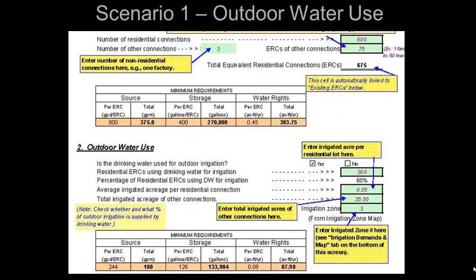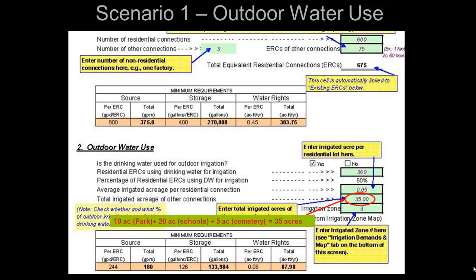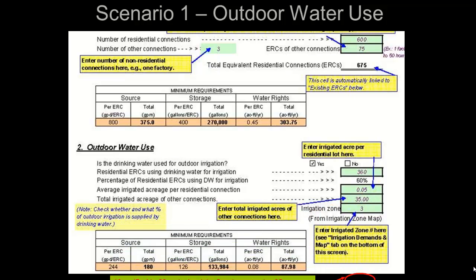Next, we'll perform the calculations for outdoor water use. This community is in Zone 3, so we enter 3 in this field. 360 of the 600 residential connections are used for irrigation, so we enter 360 in this field. The percentage of residential ERCs using drinking water for irrigation is automatically calculated at 60%. Next, we need to enter the average acreage per residential connection — we'll enter 0.5 for the data given. We then need to total the acreage for the other connections. In our scenario, the area of the park, school, and cemetery equals 35 acres. By entering this data, the minimum outdoor capacity requirements are automatically calculated.